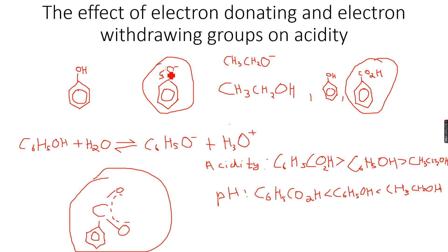Phenol comes next because the lone pair on the oxygen atom of the phenoxide ion is delocalized into the benzene ring, overlapping with the pi electron cloud and spreading over the entire ion. This makes the ion more stable. As the lone pair has delocalized into the benzene ring, it is less available to accept H+ ions, making phenol less acidic than benzoic acid but still acidic.